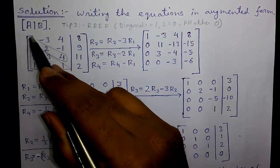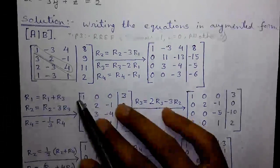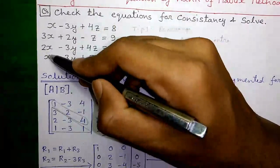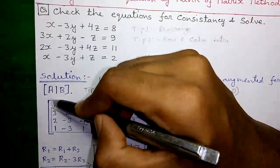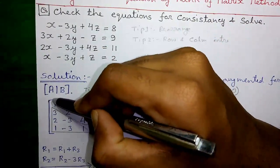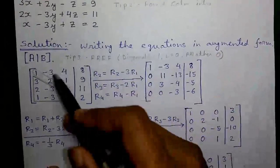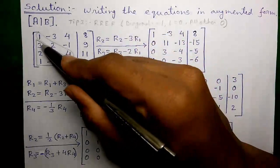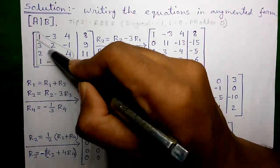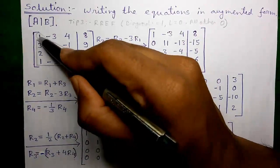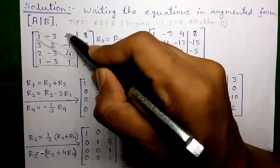First we need a 1 here on the diagonal, and there is already a 1 — that is why I told you to bring the single-X equation to the top. That way you get a 1 at this position and your calculation will be easier. Now we need to convert all numbers in the lower triangle to zero and all diagonal elements to one.